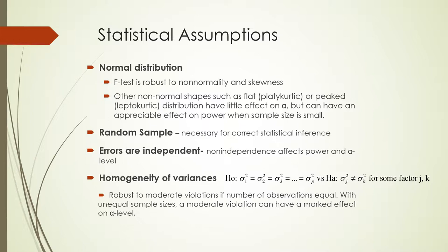Finally, homogeneity of variances: we assume the variances associated with each group in your statistical design are equal — that deviations of observations from their group means are similar across groups. The F-test is generally robust to moderate violations of homogeneity of variances, but if you have unequal sample sizes, this can become a problem and your F-test will be wrong.